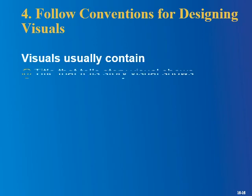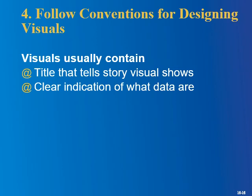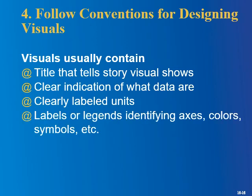Now we get to conventions — the norms that guide visuals. These include: a title that tells the story the visual shows, clear indications of what the data are, clearly labeled units, and labels or legends identifying axes, colors, and symbols. If you've ever looked at a map, it has a scale that tells you how many inches correspond to miles. Without labeling things, giving titles, and having a legend explaining what each symbol means, the visual is kind of useless — people don't even know what you're trying to tell them.